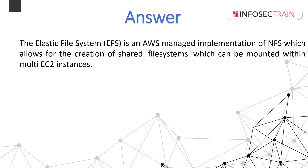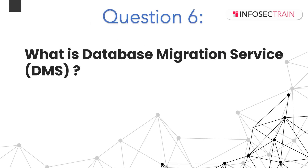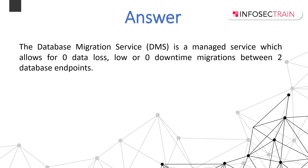What is Database Migration Service? AWS Database Migration Service is a managed service that allows for zero data loss or zero downtime migration between two database endpoints. This service is capable of moving data into or out of AWS and runs using replication instances. Source and destination endpoints point to source and target databases, and one endpoint must be on AWS. Additionally, the Schema Conversion Tool can assist with schema conversion.